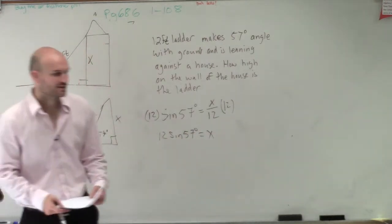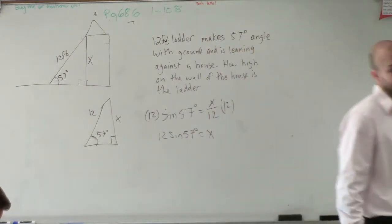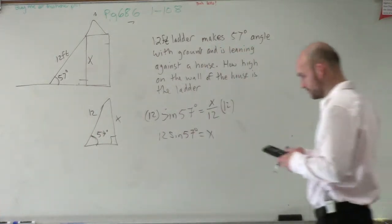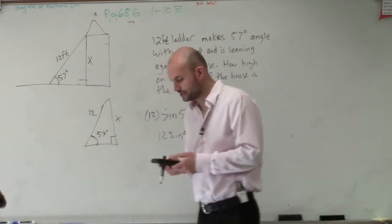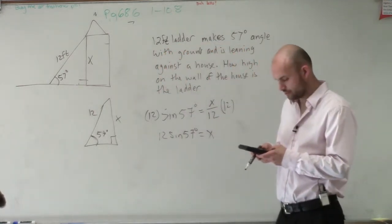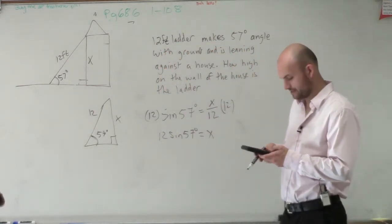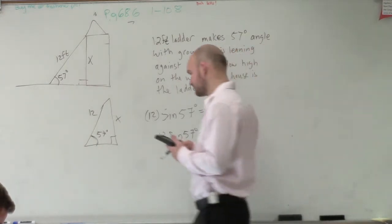So now I need to take the sine. Make sure that you're in degree mode. Since we're using degrees, when you go to your mode, you're going to want to make sure you're in degree mode. And you just do 12 times the sine of 57. And 10.06.